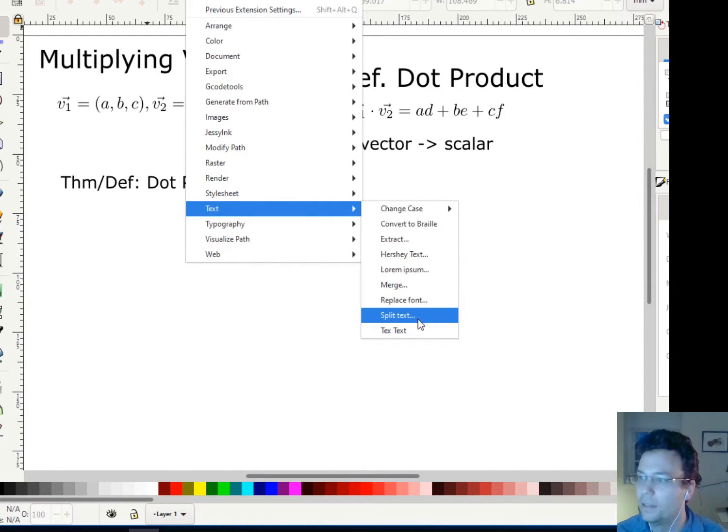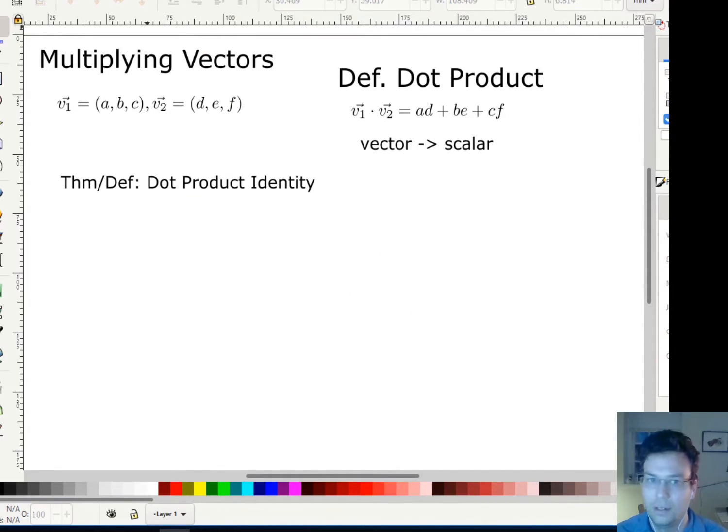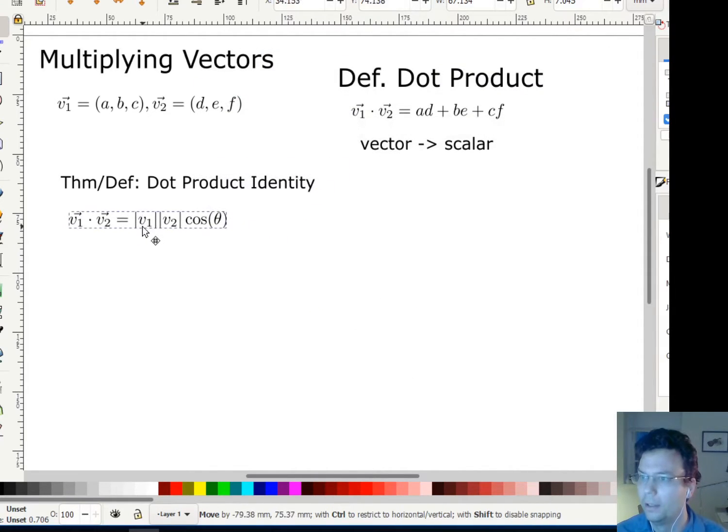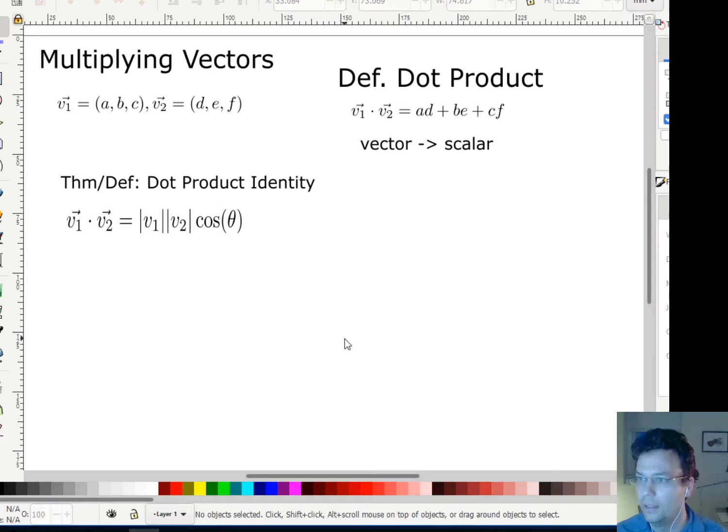We can think of these in any dimensions, but the dot product of a vector v1 with a vector v2 is the magnitude, the length of v1, times the magnitude of v2 times the cosine of the angle between them. Maybe that's starting to sound a little more like the law of cosines, if you remember that from high school trig. This is the dot product identity.